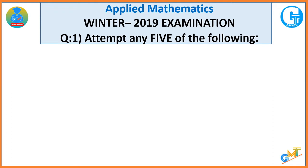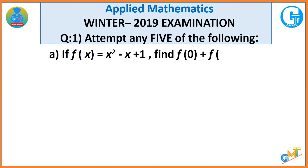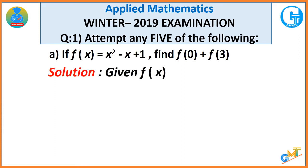The first question is: attempt any five of the following. Part (a): if f(x) is equal to x squared minus x plus 1, then find f(0) plus f(3). In the solution, first write the given as it is — f(x) is equal to x squared minus x plus 1 — and we want to find f(0) plus f(3).